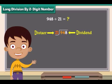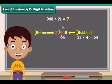Divide 94 by 21. 21 fours are 84. Write 4 above 94 and 84 below 94. Subtract 84 from 94 and write answer below 84.